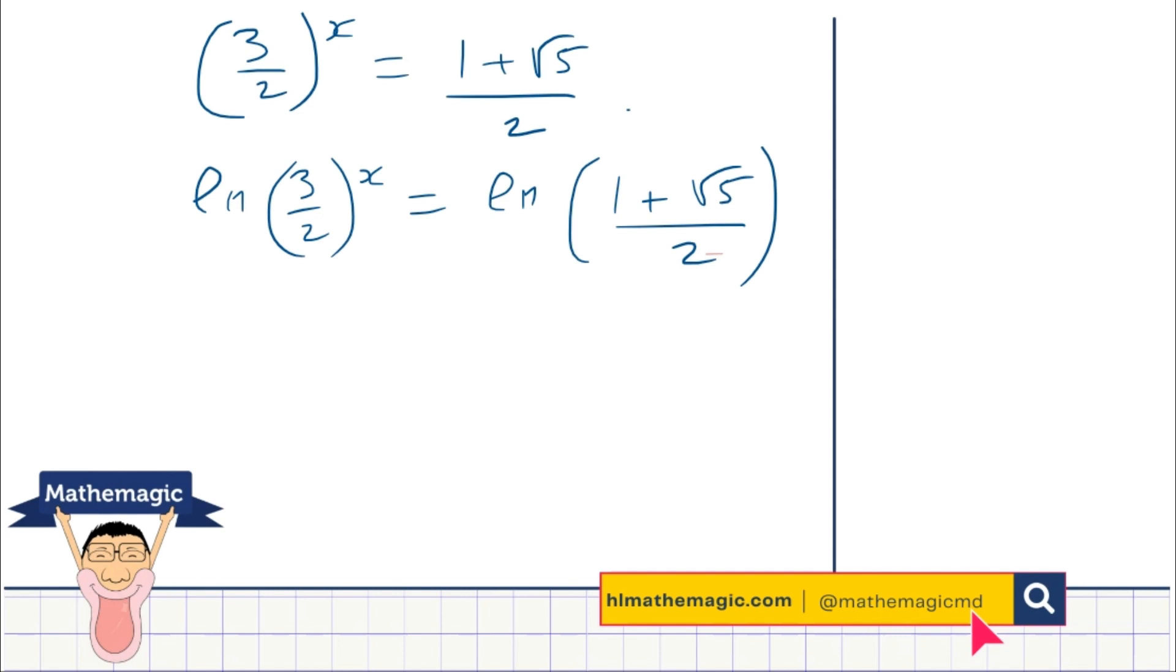And as we ln both sides, the great thing is we can use a beautiful log law here. The law we're allowed to use is a law of logarithms. We can say that ln of a to the power b is equal to b ln a. You can always drop the power in front. This law is very important because it allows us to solve power equations like the equation we're looking at right now.